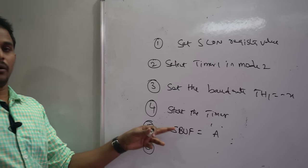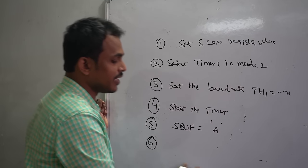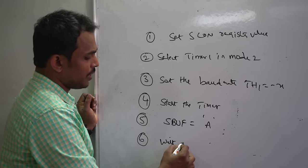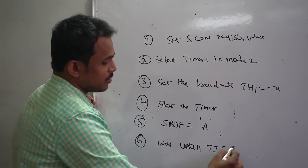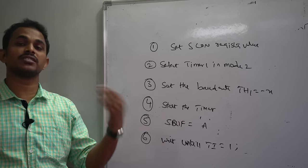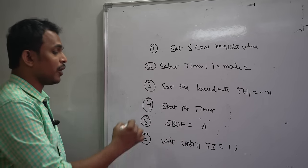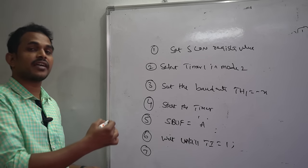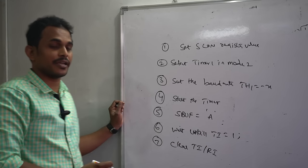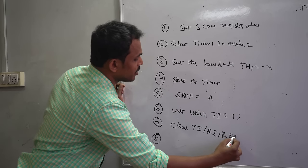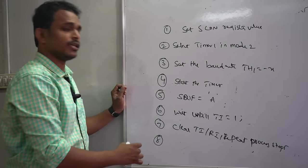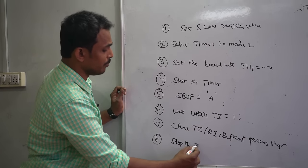Step 6 — after loading SBUF, wait until TI is set to 1 for transmission (or RI for reception), as TI indicates that the SBUF register has completed its transmission to the peripheral. Step 7 — clear TI (or RI for reception) before the next transmission. Step 8 — repeat the process from Step 5 for additional characters. Finally, when communication is complete, stop the timer.